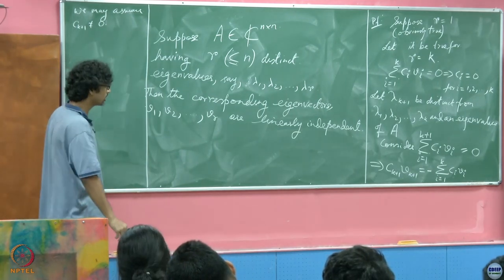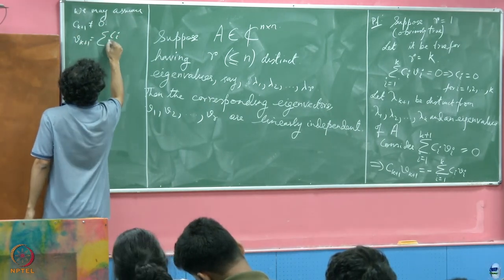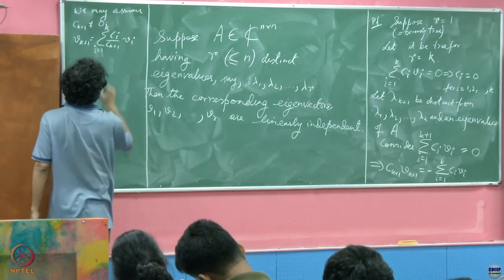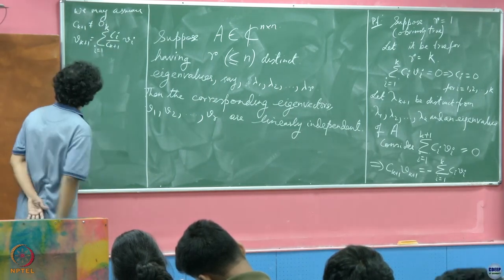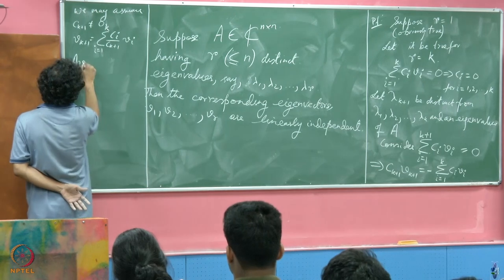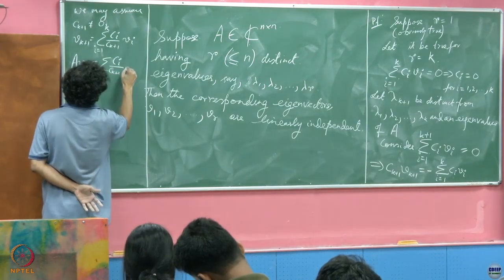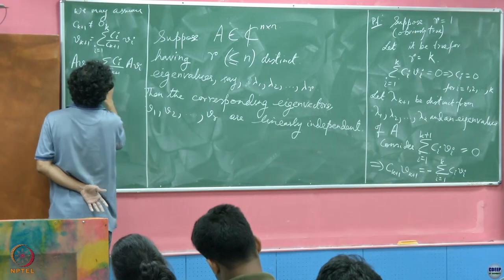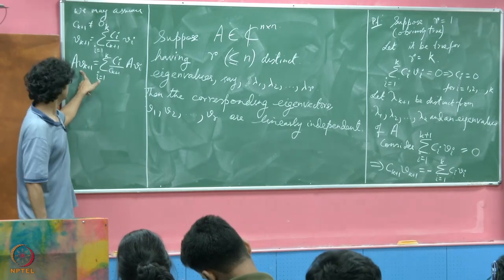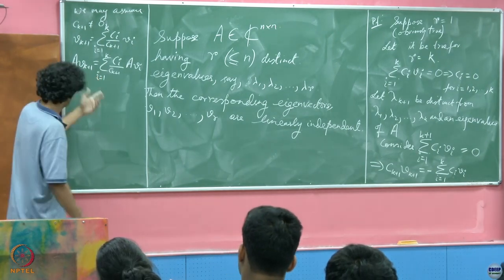Suppose ck+1 is not equal to 0, then we can divide and write vk+1 equals summation ci by ck+1 vi, i going from 1 through k. Since this is an eigenvector corresponding to lambda k+1, we can write A vk+1 equals lambda k+1 vk+1.